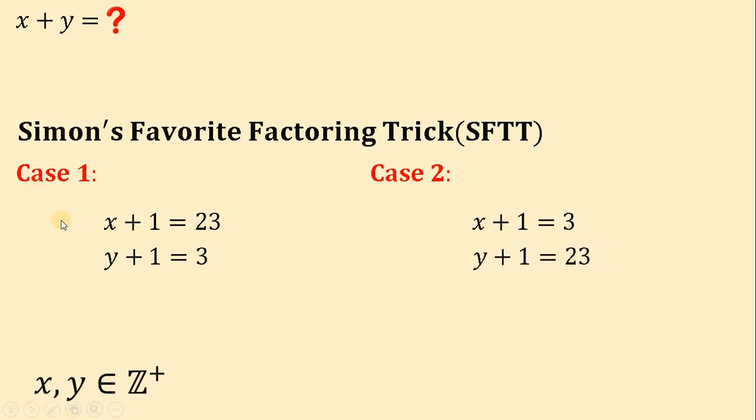Let's have first case 1. If we subtract 1 from both sides on the first equation, we get that the value of x must be equal to 22. Also, if we subtract 1 from both sides on the second equation, we get that the value of y must be equal to 2.